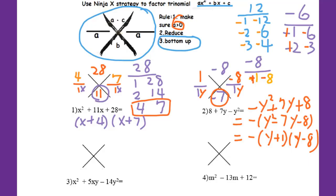When you do quadratic factoring, make sure it's in standard form and a has to be positive. If it's not positive, you have to take a negative sign outside and then do the ninja x for that.